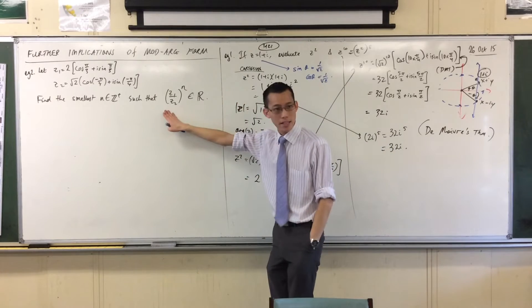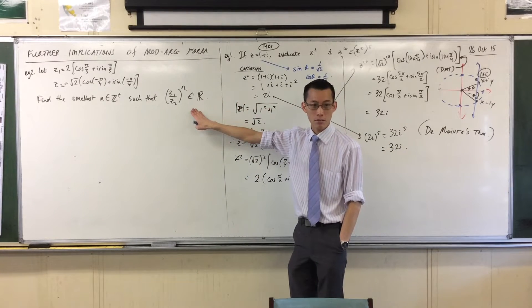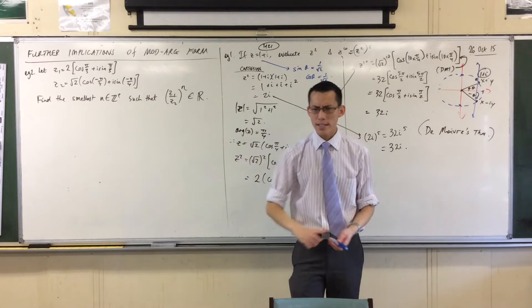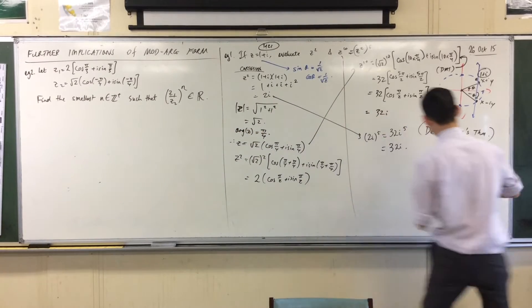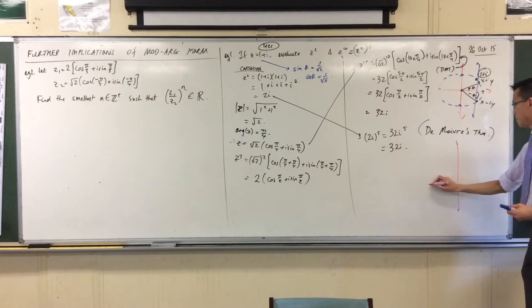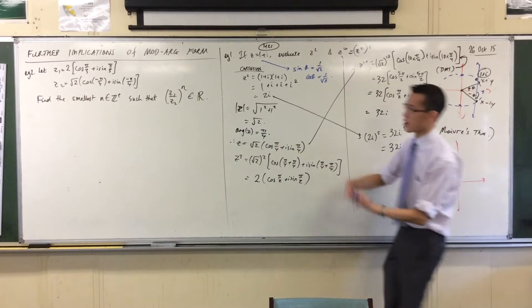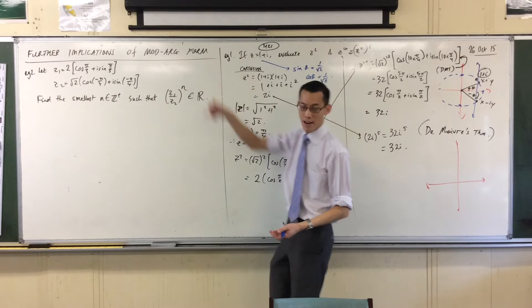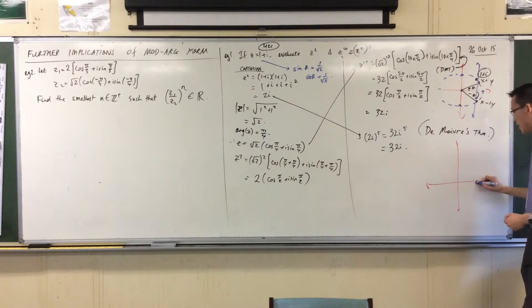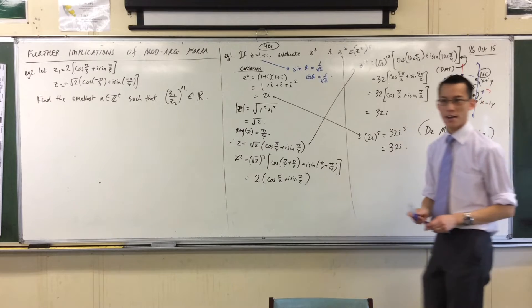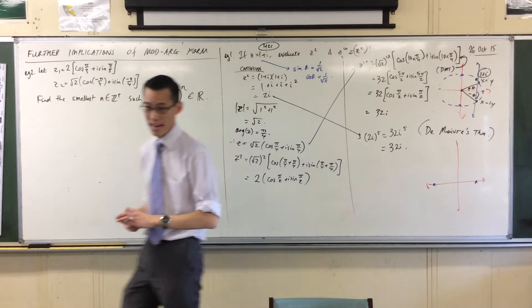In order for a complex number to be completely real, what does that look like? Let me draw my complex plane again. What I mean is that the number after some times of multiplication, I end up back over here or over here. Either on the positive real axis or the negative real axis.